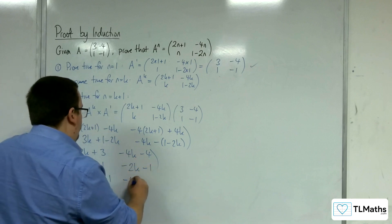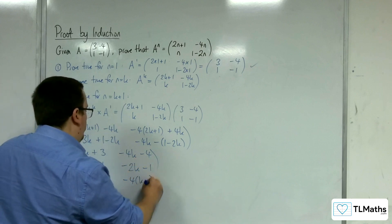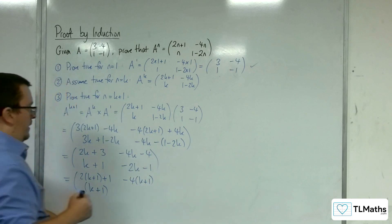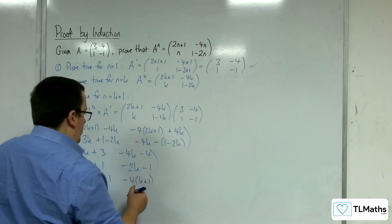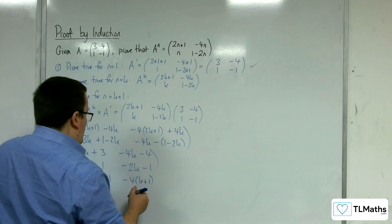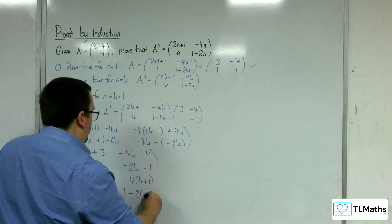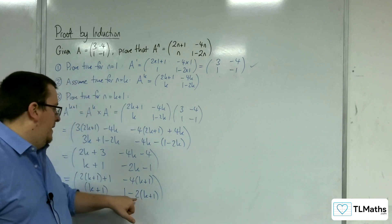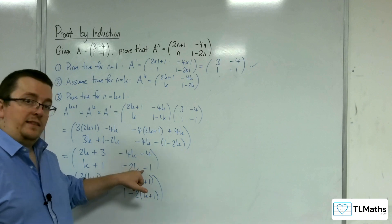Here we've got minus 4 lots of k plus 1, and here we've got minus 2 lots of k plus 1 plus 1. So 1 take away 2 lots of k plus 1, which is 1 take away 2k take away 2.